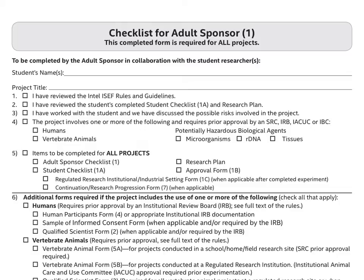This form must contain the name of the student in the case of an individual project, or the names of all the students in the case of a team project. It then follows with a project title. You need to be aware that the project title has a limit of six words and 50 characters long including spaces.